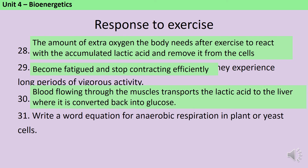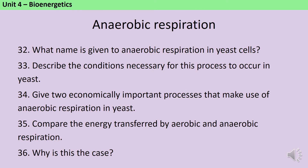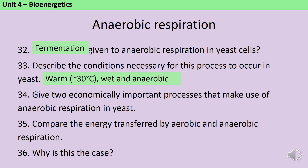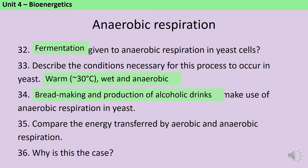The word equation for anaerobic respiration in plant and yeast cells is glucose reacts to form ethanol and carbon dioxide. We call anaerobic respiration in yeast fermentation, and in order for it to occur it needs to be warm, wet and anaerobic. If you need to name a temperature, we tend to culture yeast at a slightly lower temperature than bacteria, usually something like 30 degrees. Fermentation in yeast is really important for making bread and also making beer or alcoholic drinks in general.